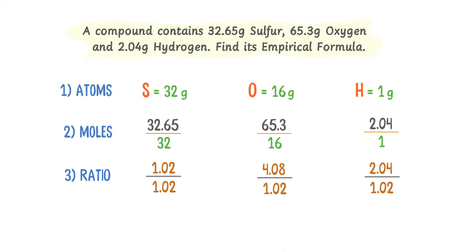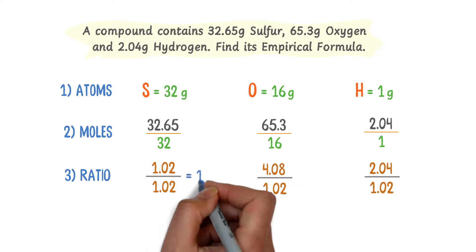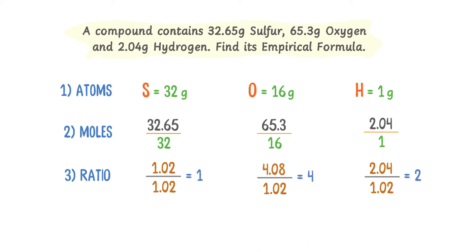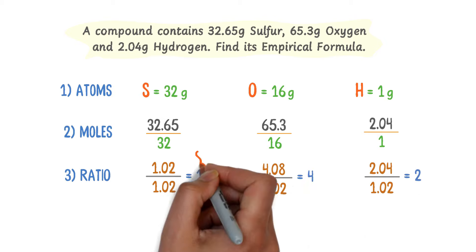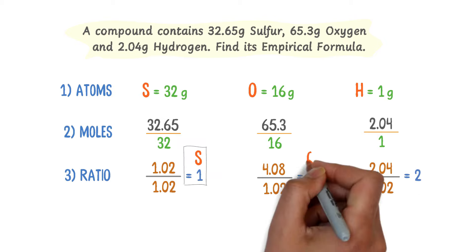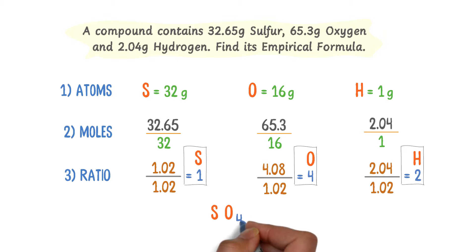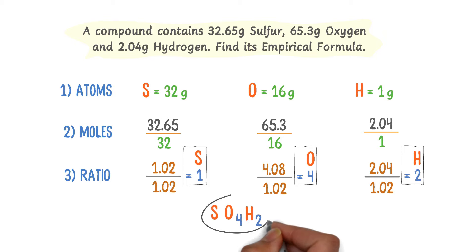After calculation, I get 1, 4, and 2. Thus, the ratio of sulfur is 1, the ratio of oxygen is 4, and the ratio of hydrogen is 2. Therefore, the empirical formula of the compound is SO4H2.